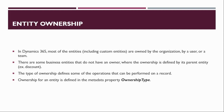Let us see what is entity ownership in Dynamics 365. Most entities, including custom entities, are owned either by the organization or by a user or a team. There are also some business entities that do not have an owner, where ownership is defined by the parent entity — for example, the discount entity. The type of ownership defines what operations can be performed on a record. In technical terms, ownership is defined in a metadata property called 'ownership' present on the entity metadata schema.